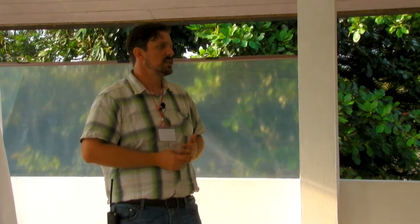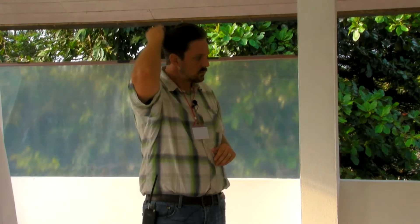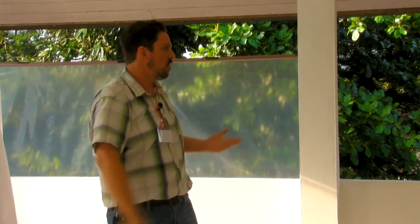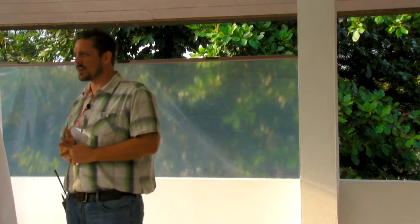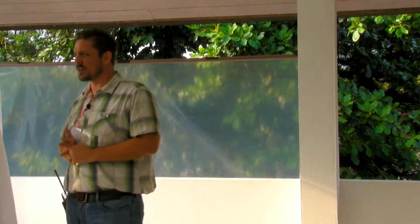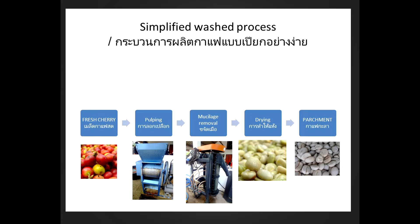Very little robusta in the world is washed, but there is an increasing amount of robusta starting to be washed, especially in high-quality robustas. Most arabicas throughout the world outside of the countries listed earlier are all washed process coffees. A simplified wash process: you have the fresh cherry, send it through the pulping machine, then take it through mucilage removal — either using the machine or fermentation — then dry it to 12 percent, which gives you parchment, and then once it's ready to be sold you send it to the dry mill to have the parchment removed. That is your most basic form of washed coffee.